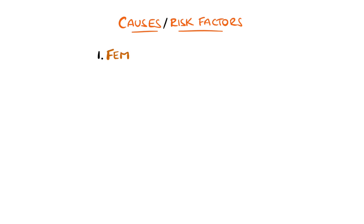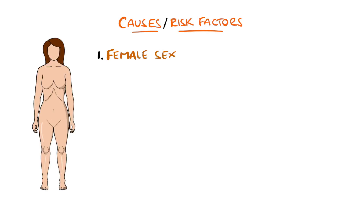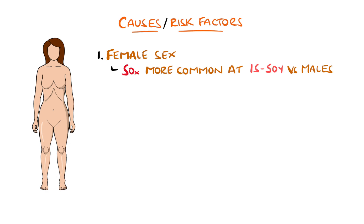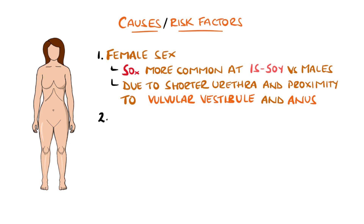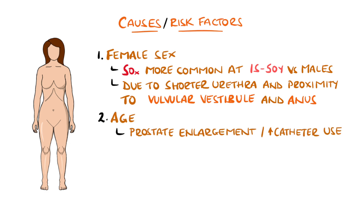Risk factors include female sex, where it is estimated to be 50 times more common between the ages of 15 to 50 compared to males. This is largely thought to be due to the anatomy, meaning a shorter urethra and so a shorter distance for bacteria to ascend, and close proximity to other sources of infection like the vulvular vestibule and anus.